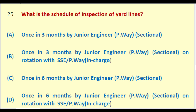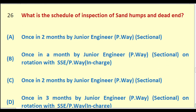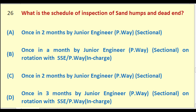Additional washable apron inspection answers provided: once in six months by Junior Engineer Permanent Way Sectional; once in three months by Junior Engineer Permanent Way Sectional on rotation with SSE Permanent Way in charge. The right answer stated is: once in a month by Junior Engineer Permanent Way Sectional on rotation with SSE Permanent Way in charge.